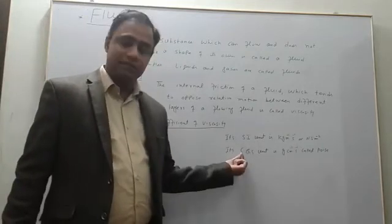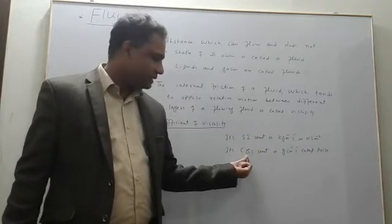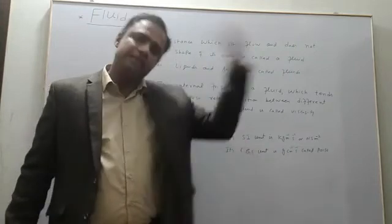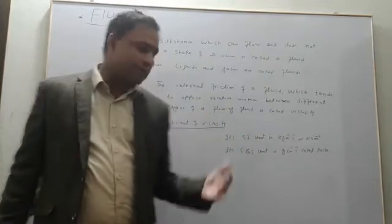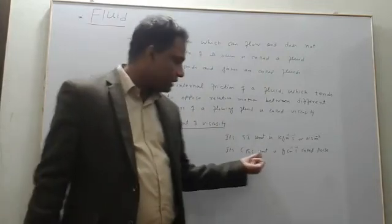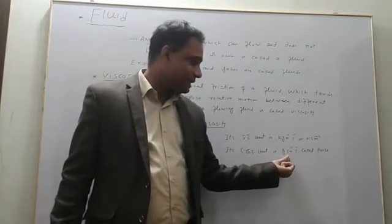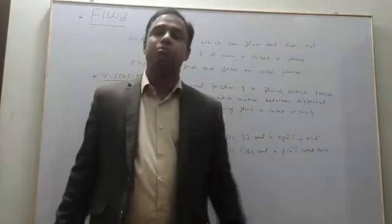C for centimeter, G for gram, S for second. The CGS system was the first system of measurements. In that unit, the coefficient of viscosity unit was gram per centimeter per second, also called poise.